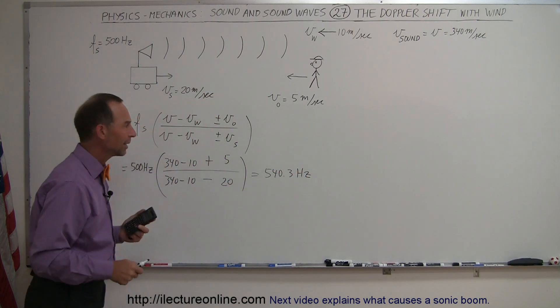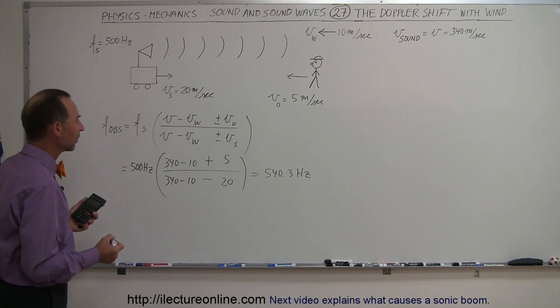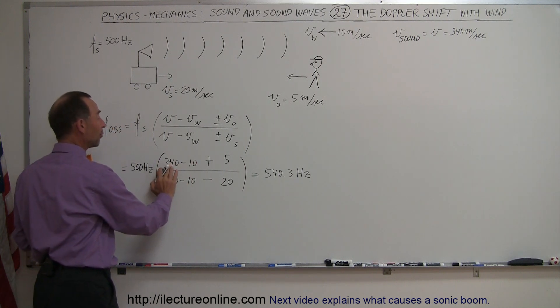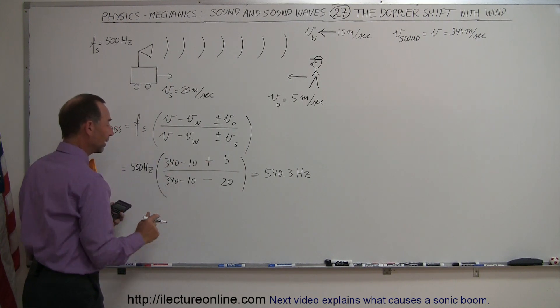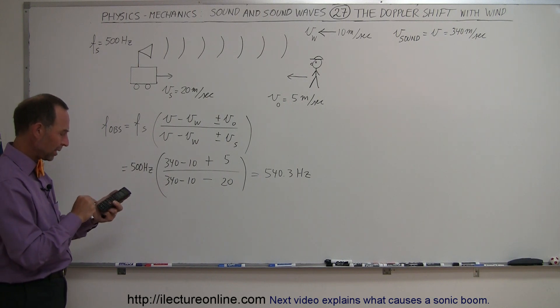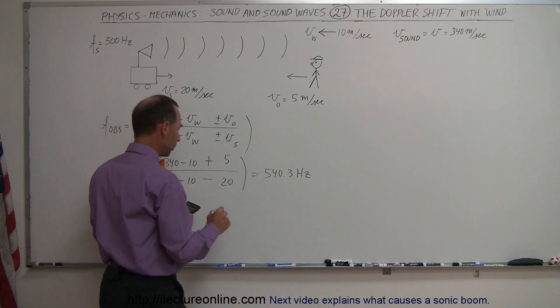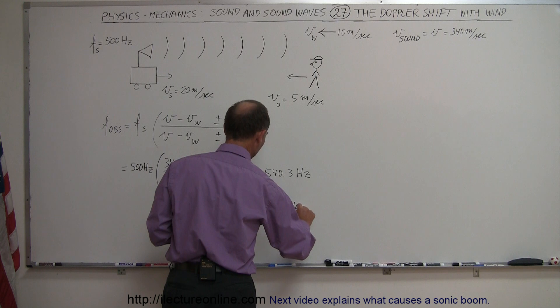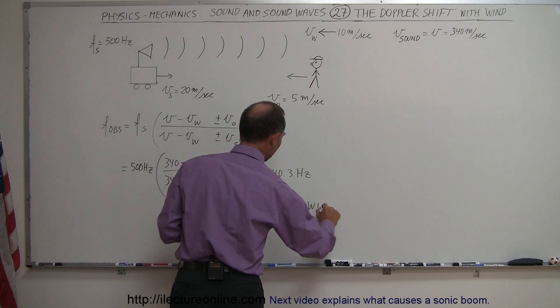Now what would happen if the wind wasn't there? Then we get 340 plus 5, 340 minus 20. So 345 divided by 320, multiply times 500, and we will get 539.1 Hertz without wind, if it was windstill as a comparison.